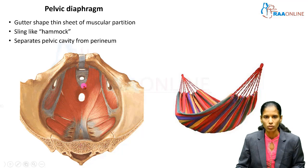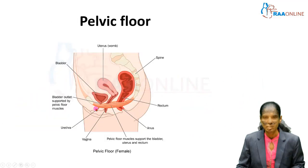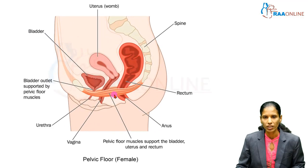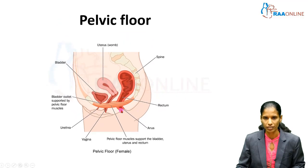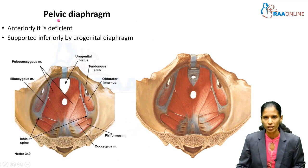This is a mid-sagittal section of the female pelvis where you can appreciate the hammock appearance of the pelvic diaphragm, separating the true pelvis above and the perineum below. The pelvic viscera are arranged from anterior to posterior: the anteriormost is the urinary bladder, the middle is the uterus and vagina, and the posteriormost is the rectum, which continues as the anal canal.